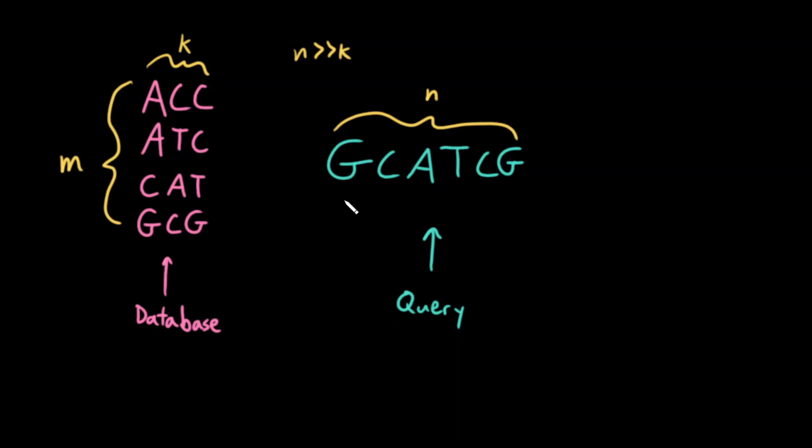First of all, how many start positions are there? Well in this example if k equals three there are one, two, three, four total start positions. In general there are n minus k plus one start positions, but because n is significantly greater than k we can just simplify and say there's big O of n start positions.